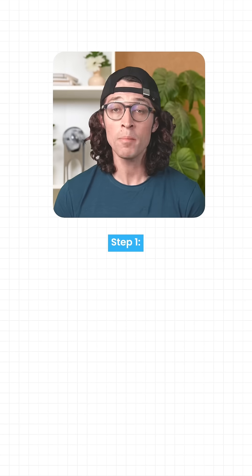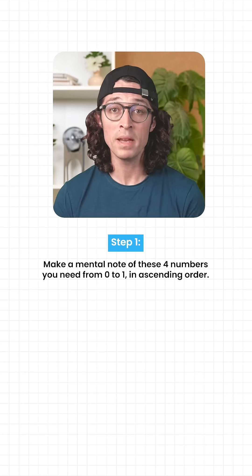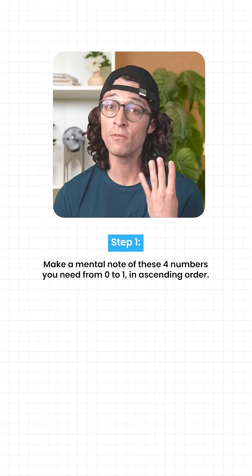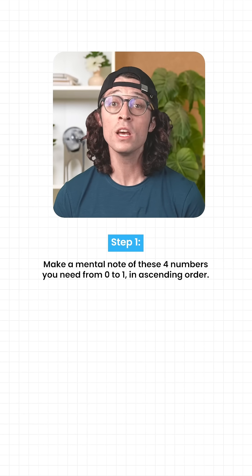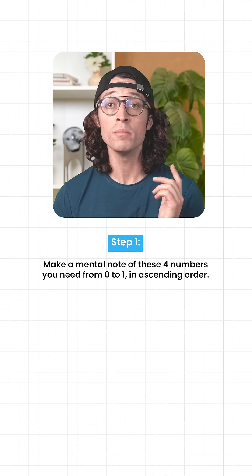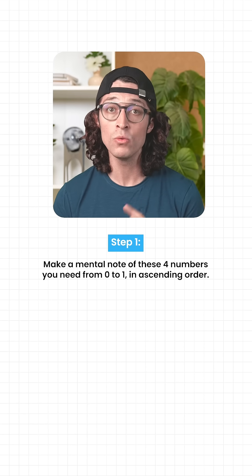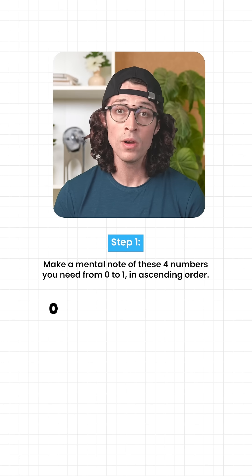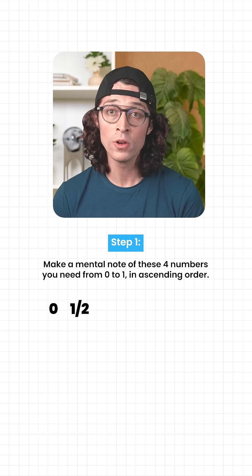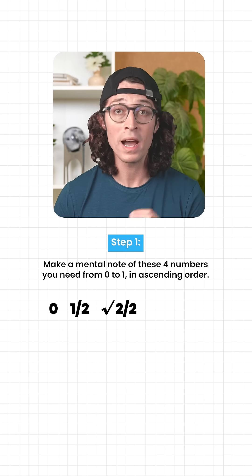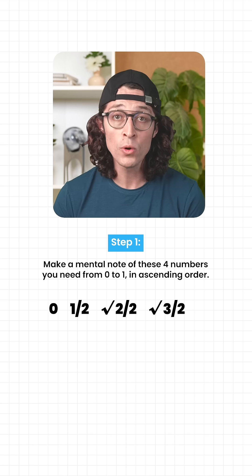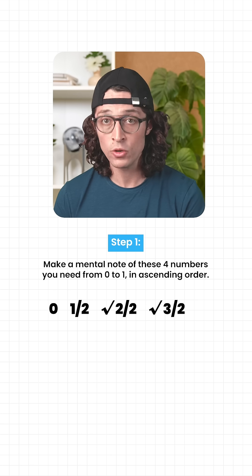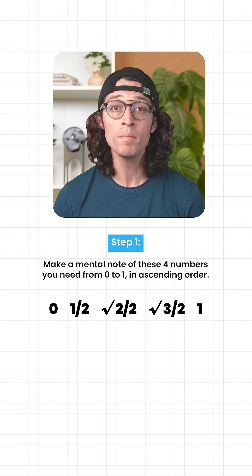The first step is to make a mental note of these four numbers you need — from 0 to 1 in ascending order: 0, one-half, root 2 over 2, root 3 over 2, 1. That's it.